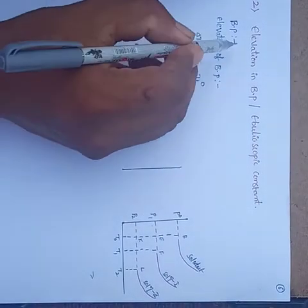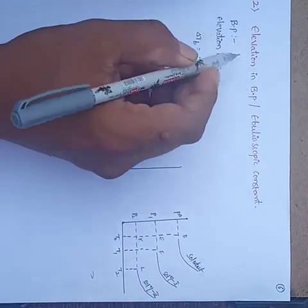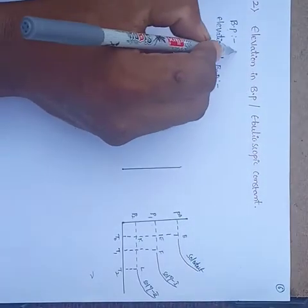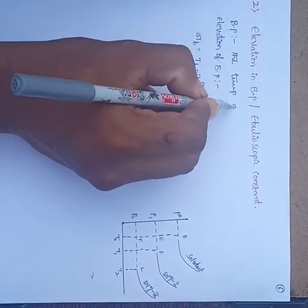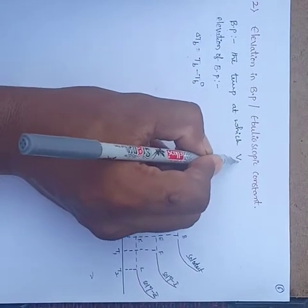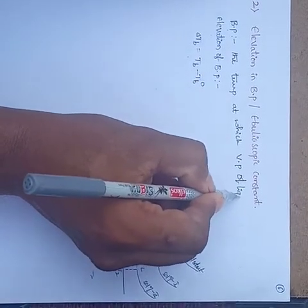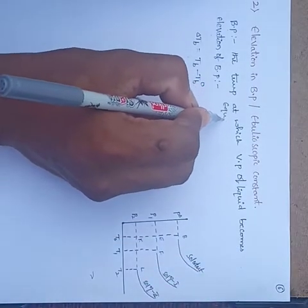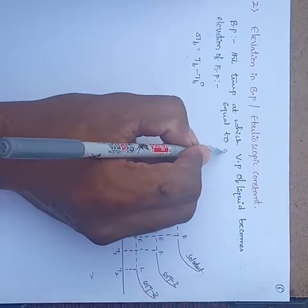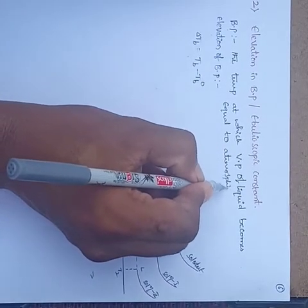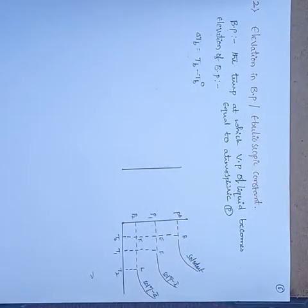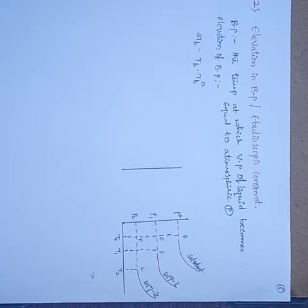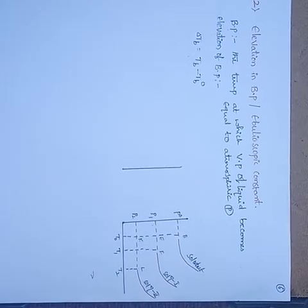The second colligative property is elevation in boiling point, also known as the ebullioscopic constant. Boiling point means the temperature at which vapor pressure of liquid becomes equal to atmospheric pressure.